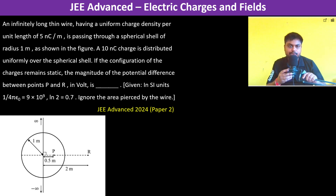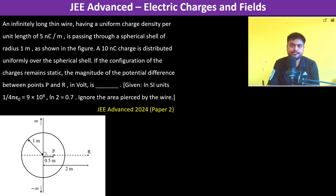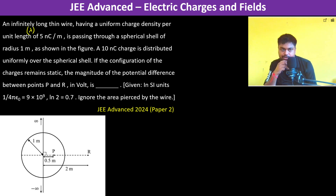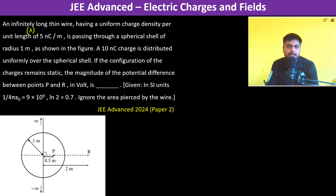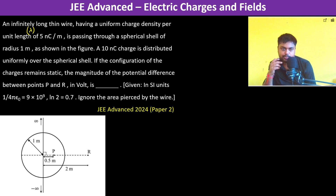An infinitely long thin wire having a uniform charge density per unit length lambda is passing through a spherical shell of radius 1 meter. A 10 nano coulomb charge is distributed uniformly over the spherical shell. If the configuration of the charge remains static, the magnitude of the potential difference between points P and R in volts is given by: